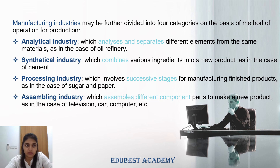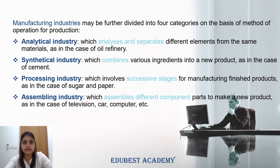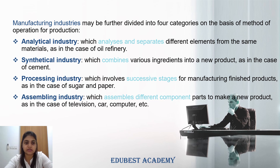Synthetical industries are just the opposite. Different types of elements are combined together to form one material. For example, cement — cement is not made of just one thing; cement has many different elements which need to be mixed together. For instance, concrete and sand — when all these elements are mixed together, cement is formed. Basically, when many ingredients are combined, a new product comes out, which we produce in synthetical industry.